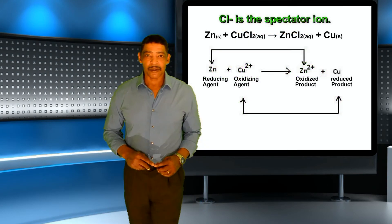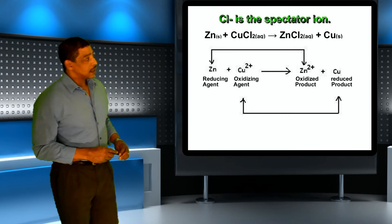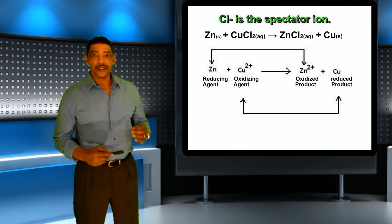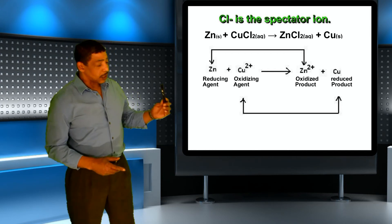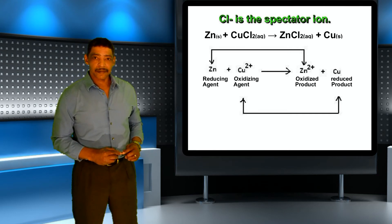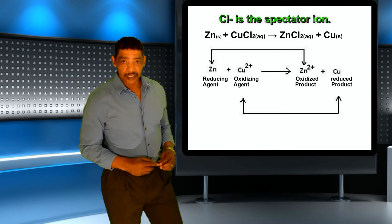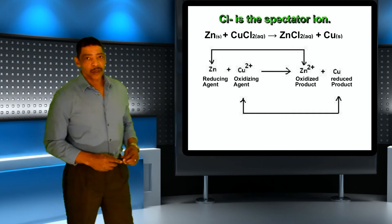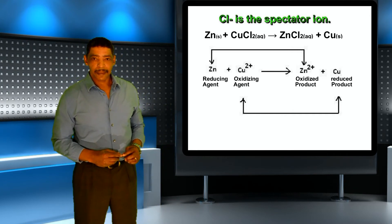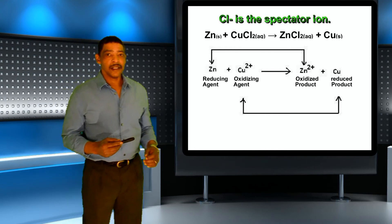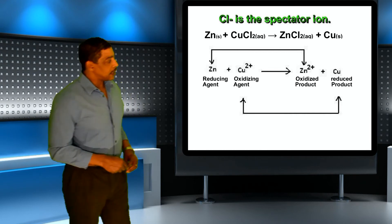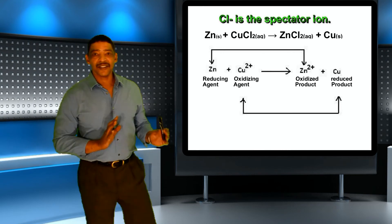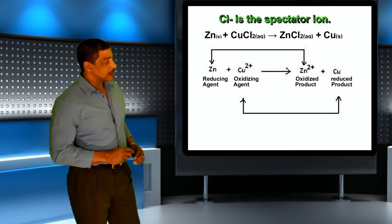In our example where zinc metal reacts with copper two chloride, the zinc metal will provide the electrons for the reduction process to occur, and zinc will represent the reducing agent. The copper two plus cation will accept those electrons, thus allowing oxidation to occur, and the copper two plus cation will represent the oxidizing agent. A helpful hint is that both agents — the oxidizing agent and the reducing agent — will appear on the reactant side of the oxidation-reduction equation.